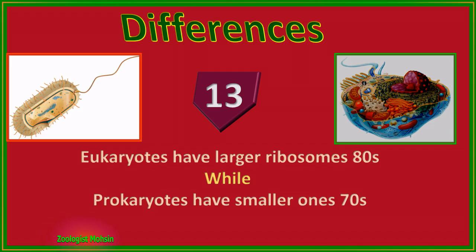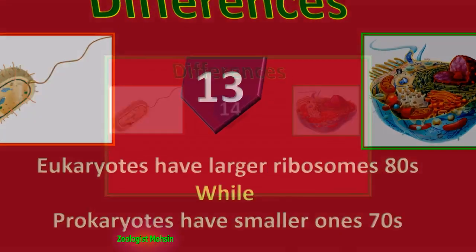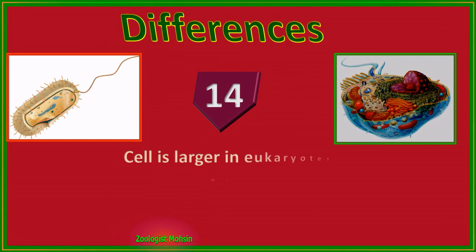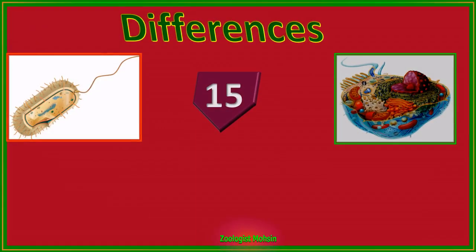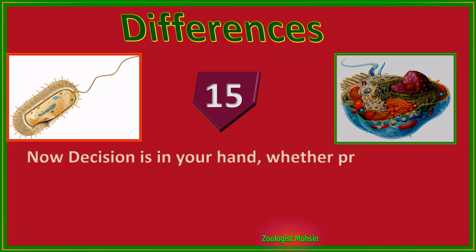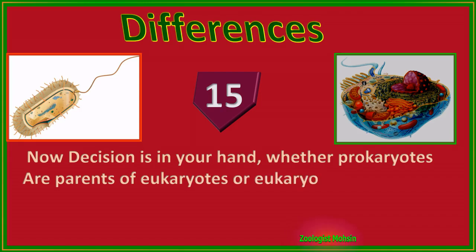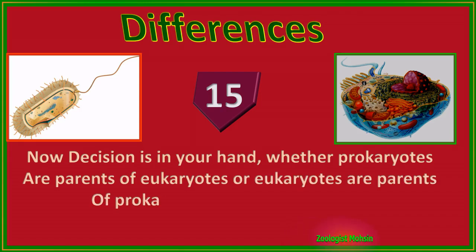Number thirteen: eukaryotes have larger ribosomes — 80S — while prokaryotes have smaller ones — 70S — based on centrifugation. Number fourteen: eukaryotic cells are larger in size, while prokaryotic cells are smaller.